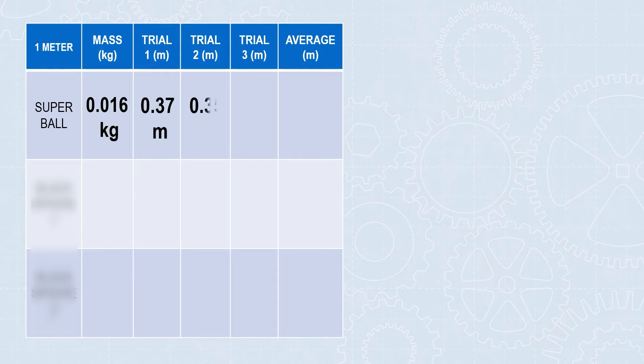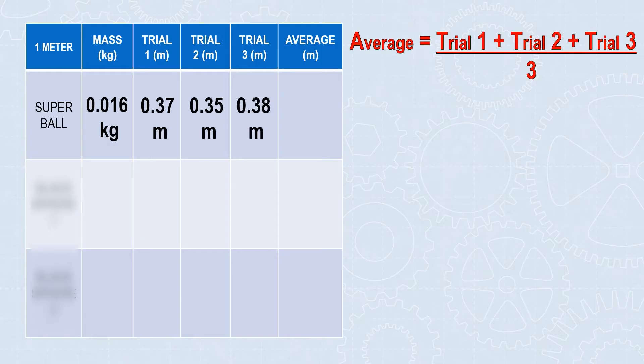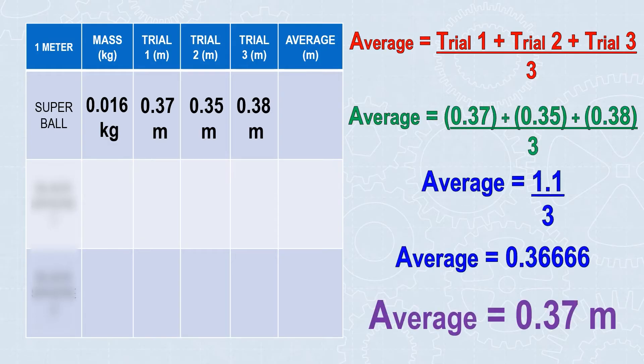You'll measure the rebound height three times, and then you'll add up those three trials and divide by three to get the average. My average in this case is 0.37 meters, or about 37 centimeters.